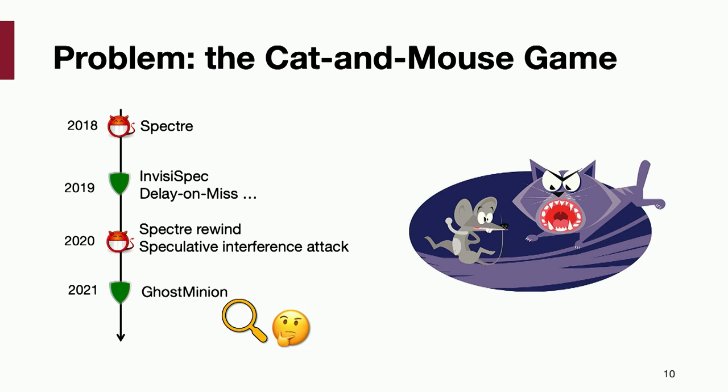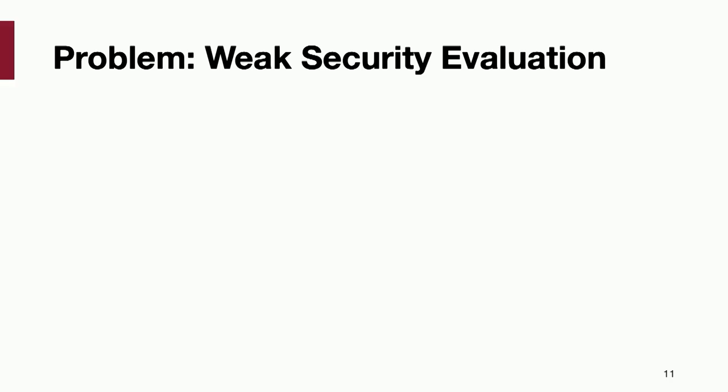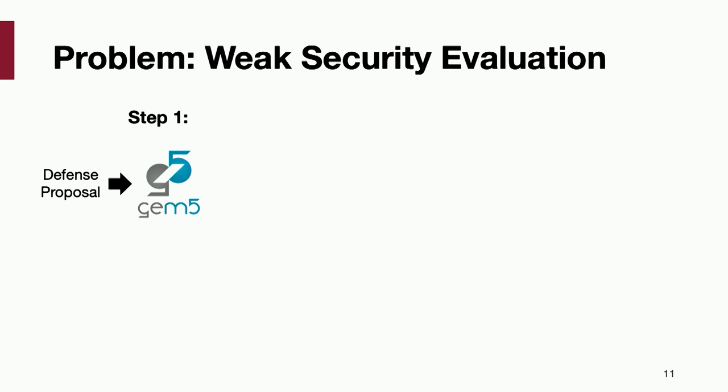Once you make a system complex, it's very likely there's a bug in implementation, and you need to think about all the corner cases. The community has not had a good way to evaluate security for side channels. What we were actually doing was using rather weak approaches: implement the defense in a simulator — the community widely uses Gem5, a performance-oriented simulator — then run the original Spectre attack on it, and if the attack no longer works, we say it's fine.